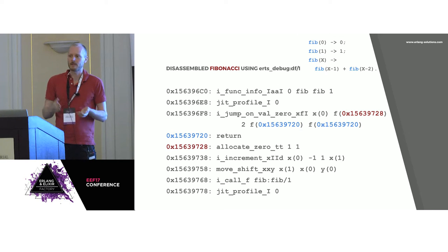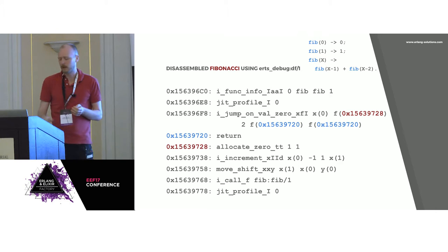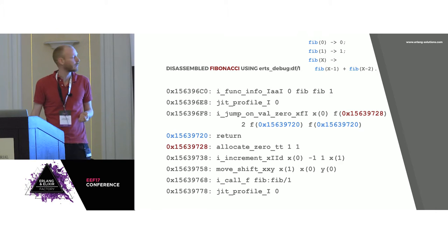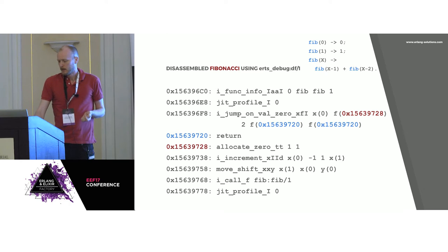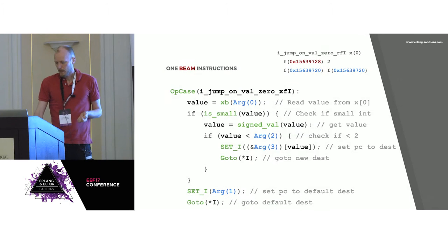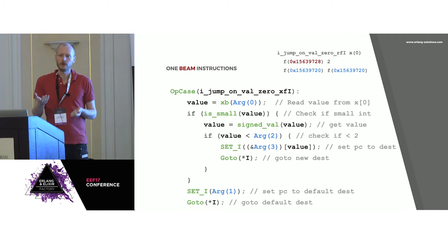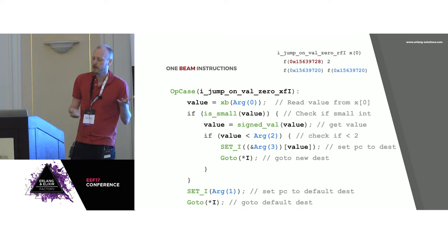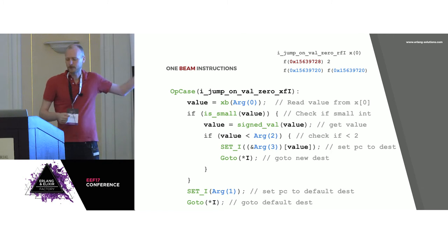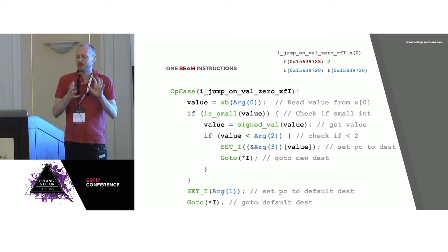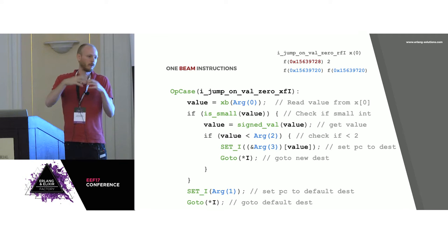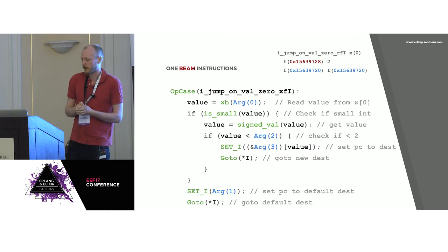Most instructions are fairly simple, except for the binary syntax, which is a mess and very hard to follow. But most of the others are very simple. This is the iJumpOnVal instruction written in C code with a lot of macros to do various things — everything boils down to this C code that we compile using GCC.